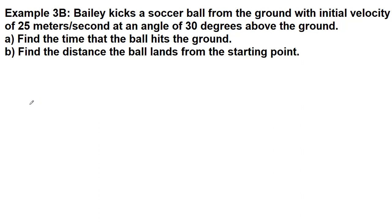We look at the problem, and the very first step that we did back in Chapter 2, and we'll continue to do in these projectile motion problems, is to draw a picture as we go. So this is labeled as Step 1. Bailey kicks a soccer ball from the ground, so we have the ground, we have a soccer ball, and the initial velocity is 25 meters per second at an angle of 30 degrees.